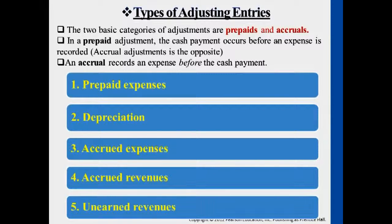Depreciation means recognizing the part of the asset's value that has already grown old and is no longer useful. Categories three and four are types of accruals — accumulated expenses or accumulated revenues — which are again not yet related to cash; they represent future cash receipts or future cash payments.